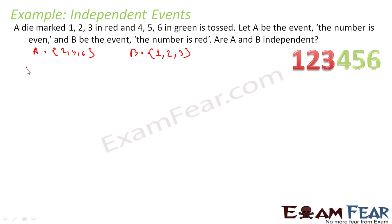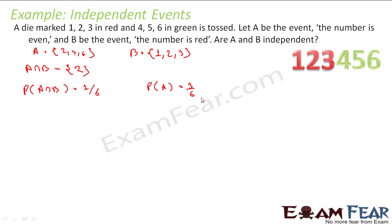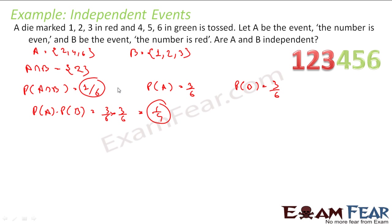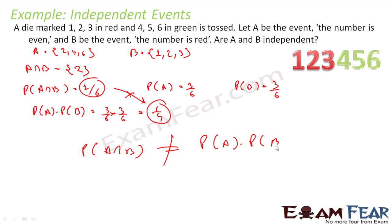P(A) × P(B) = 3/6 × 3/6 = 1/4. Since 1/4 ≠ 1/6, P(A∩B) is not equal to P(A) × P(B). Therefore, A and B are not independent events.